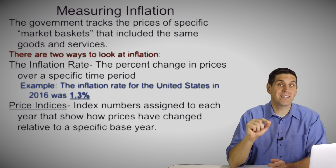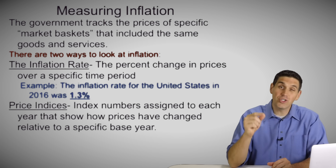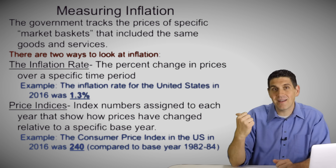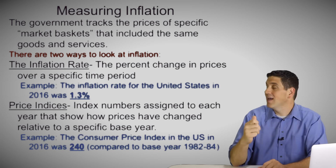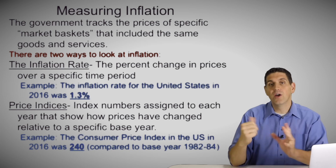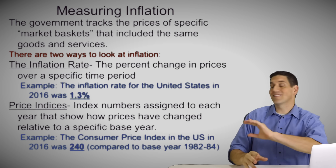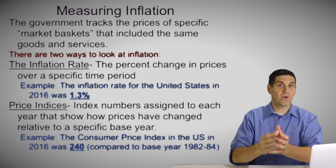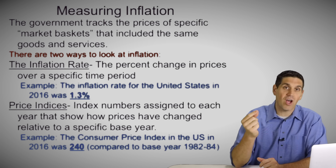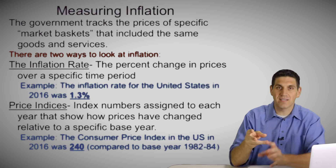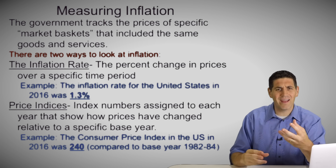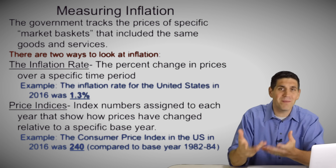There are also indices or index numbers, and those show you how prices have changed since a base year. For example, the consumer price index for 2016 was 240. Now, 240 is not a percent — it's an index number. This is where students get super confused: the CPI is not a percentage, it's a number. But what does it mean?